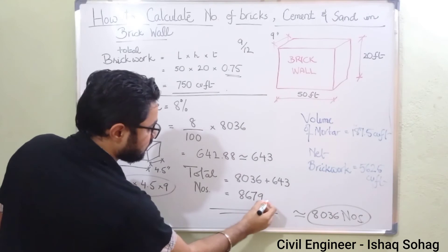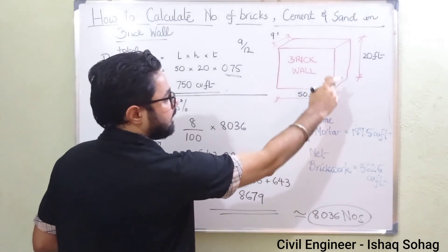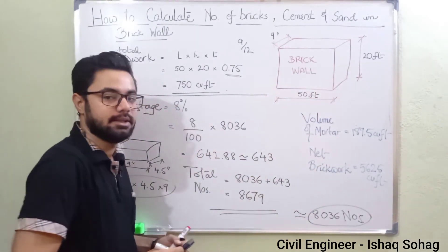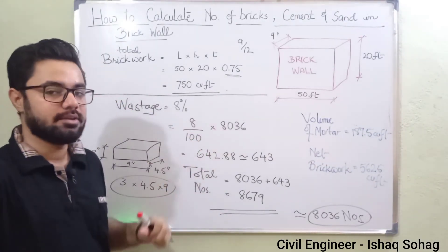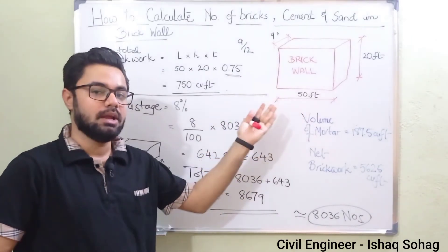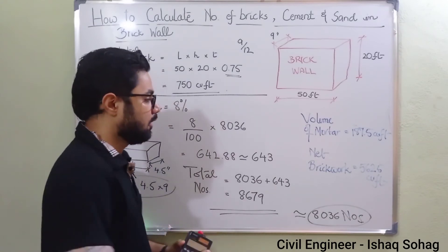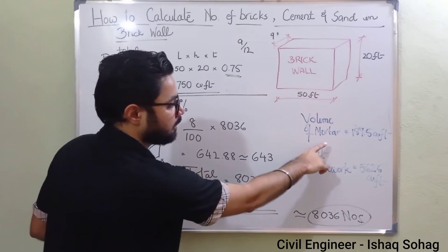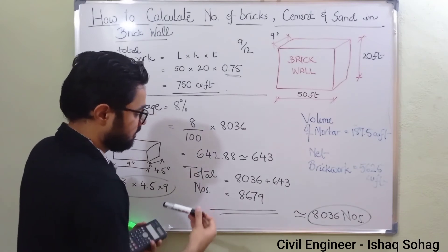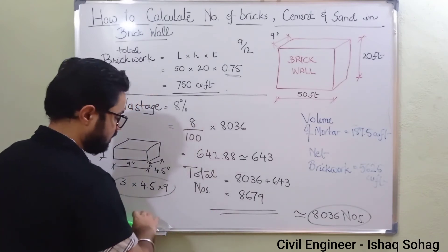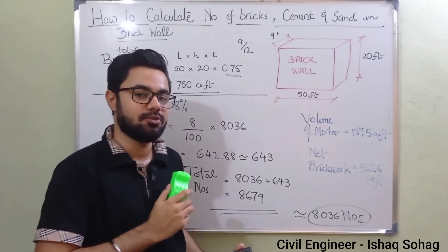So this is the total number of bricks we need, given a wall of length 50 feet, height 20 feet, using 9-inch bricks. This was just an example — you may use different dimensions to get your own result. We have found the volume of mortar and the total number of bricks, which is 8679. Now we move to calculating the volume of cement and sand.